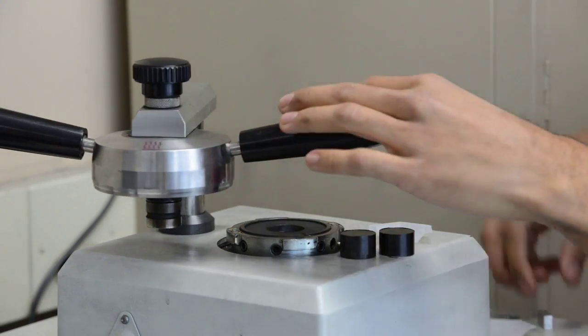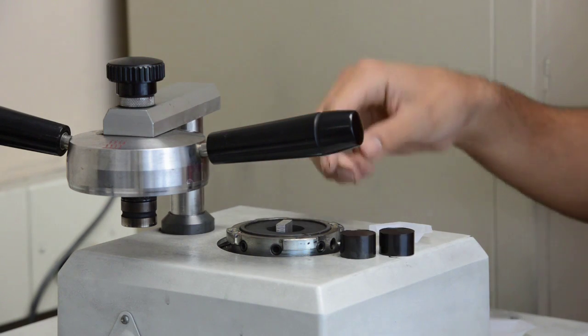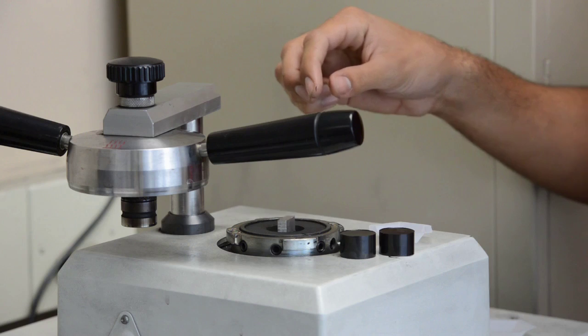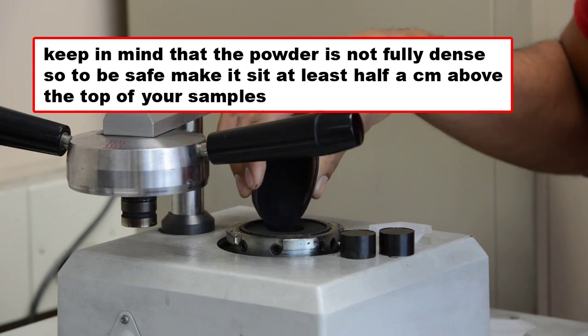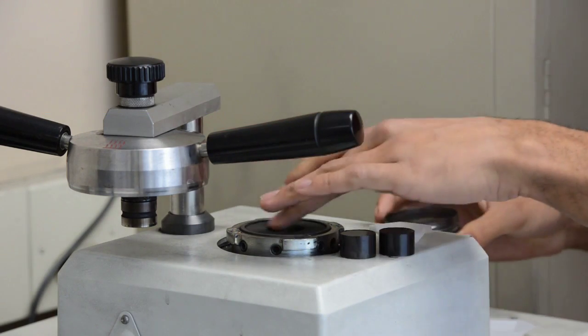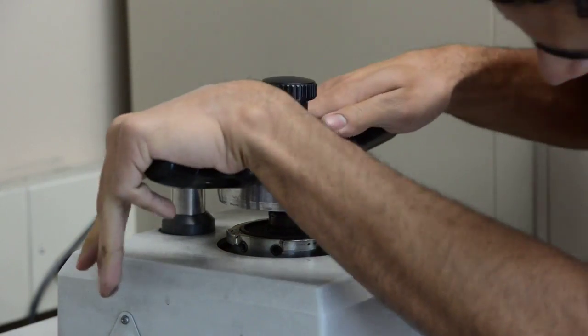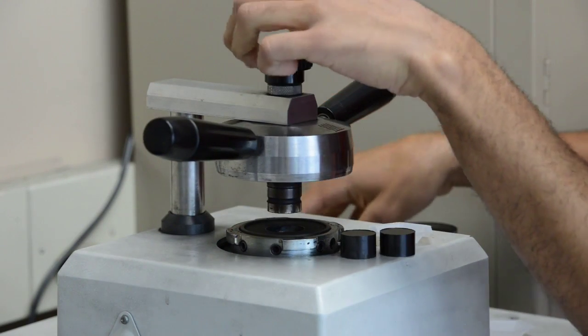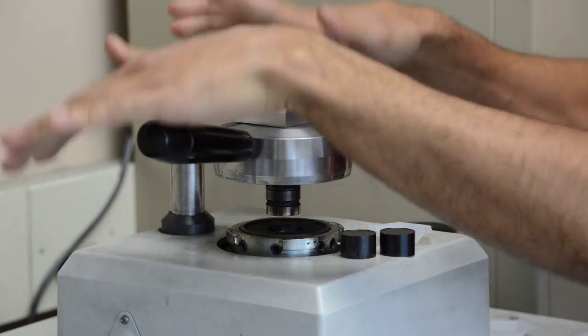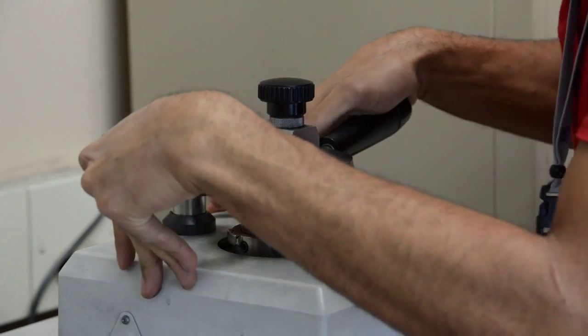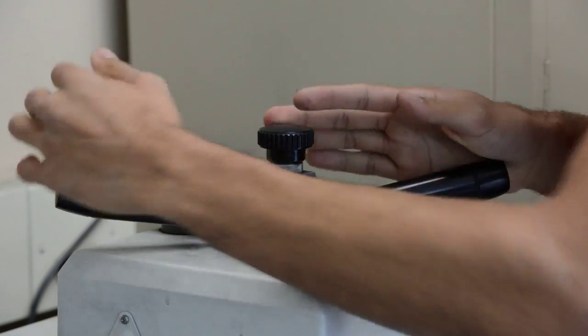So I'm just going to fill this in with conductament. This is the case where I didn't remove all of the conductament on the side. Put that in, twist it, and start the cycle again.